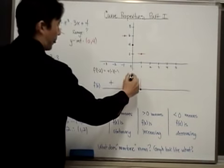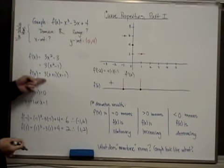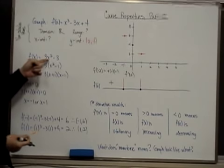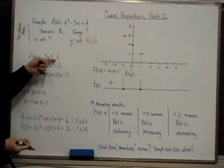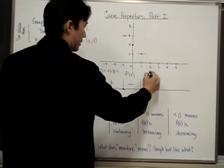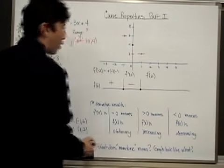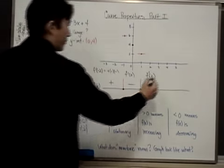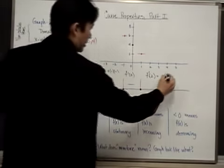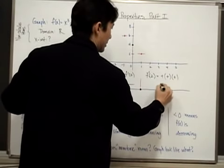Now let's see what happens when I choose f prime of 0. If I substitute 0 into x, the whole part simplifies and I come out with a negative — so that's going to give me a negative. And if I take f prime of 2, that gives me 3, which is positive, times a positive value from (2+1), times a positive value from (2−1), so this is all positive.